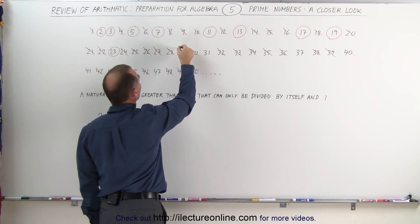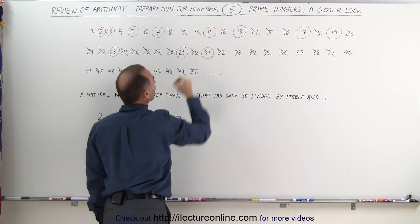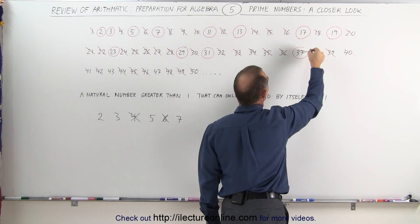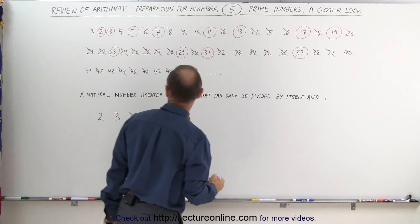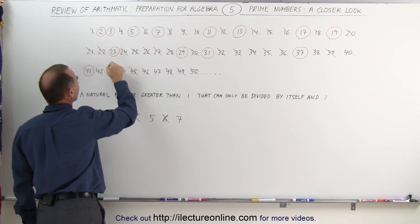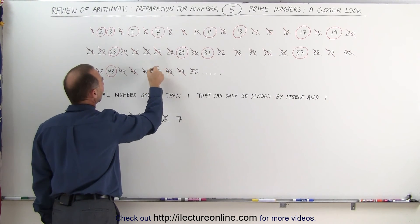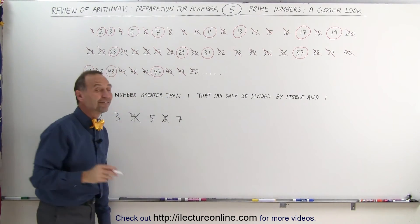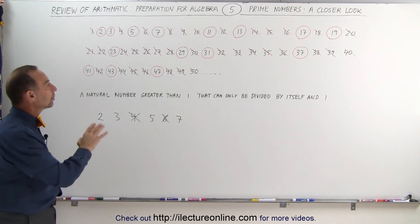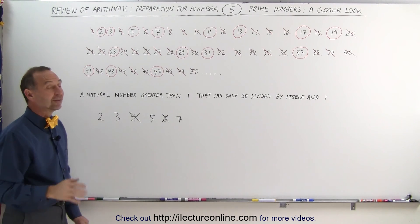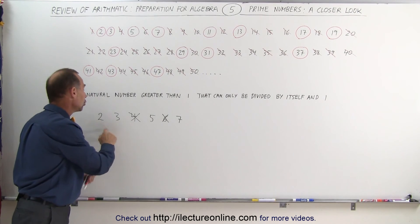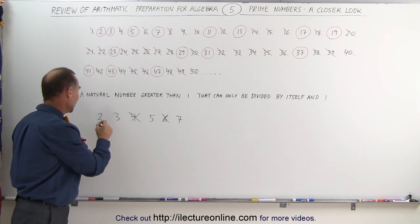29 is a prime number. 31 is a prime number. 37 cannot be divided by any other number than 1 and itself. 41 is a prime number. 43 is a prime number, and 47 is a prime number. So those are the prime numbers that are 50 or smaller. Notice that we found all of the prime numbers below 50 by simply seeing which numbers could be divided by any of the smaller prime numbers: 2, 3, 5, and 7.